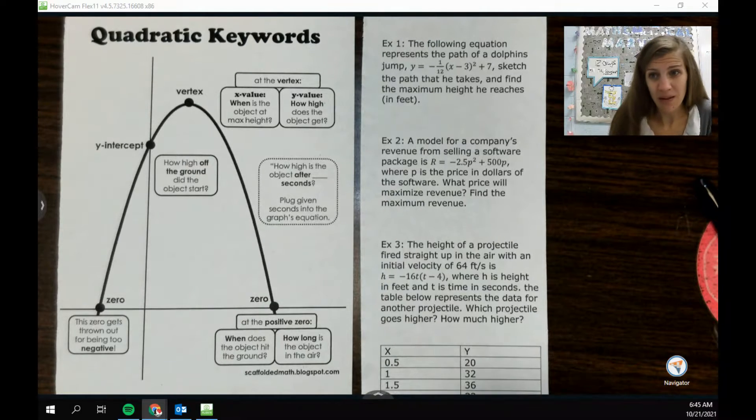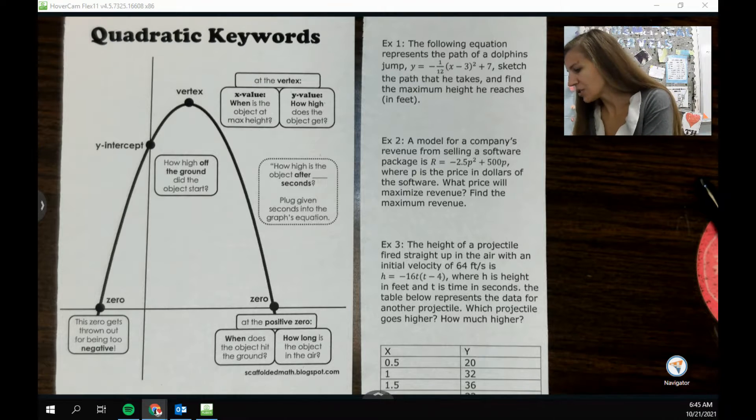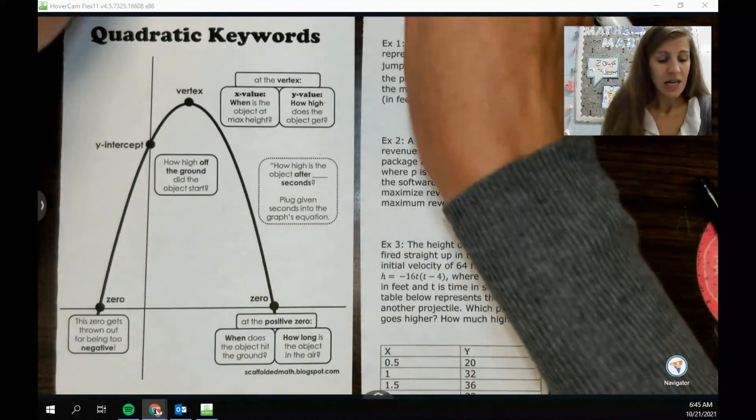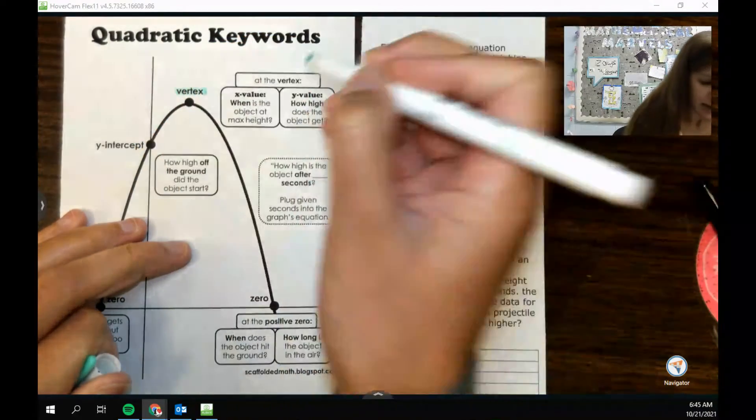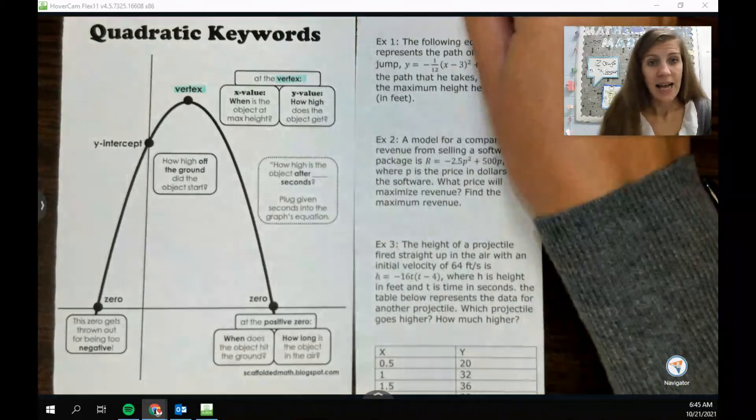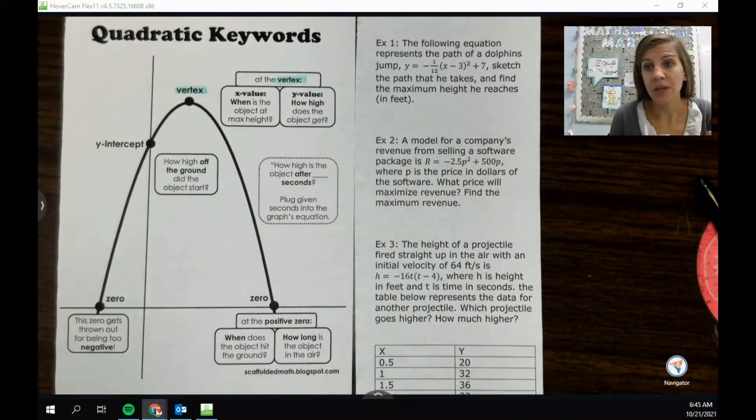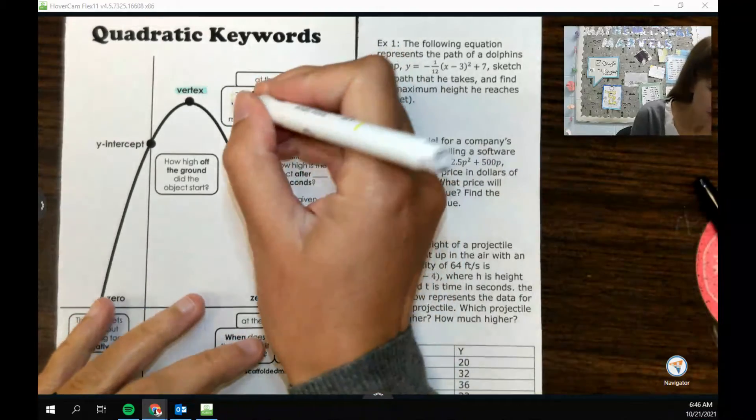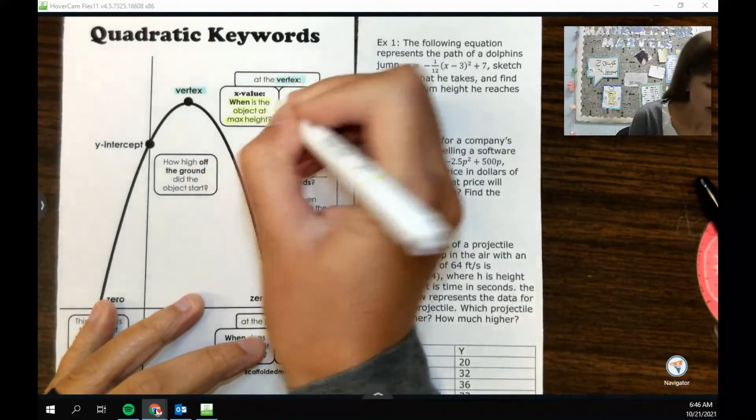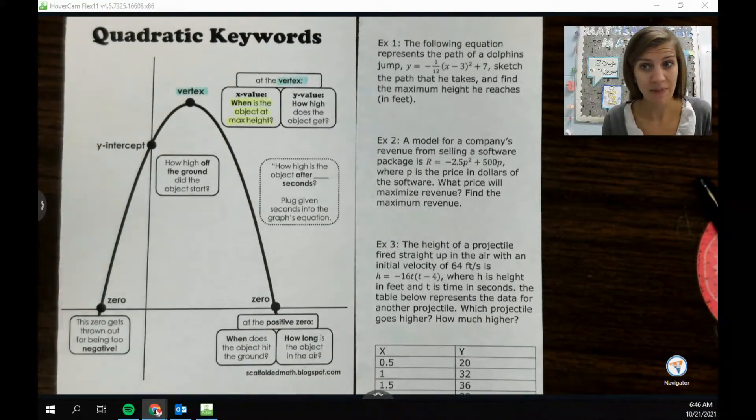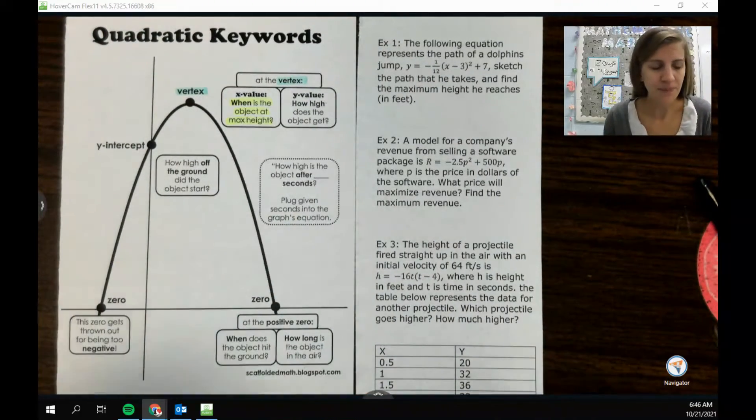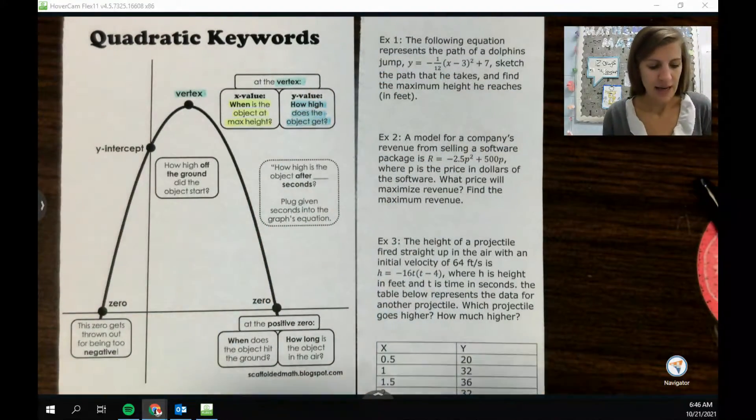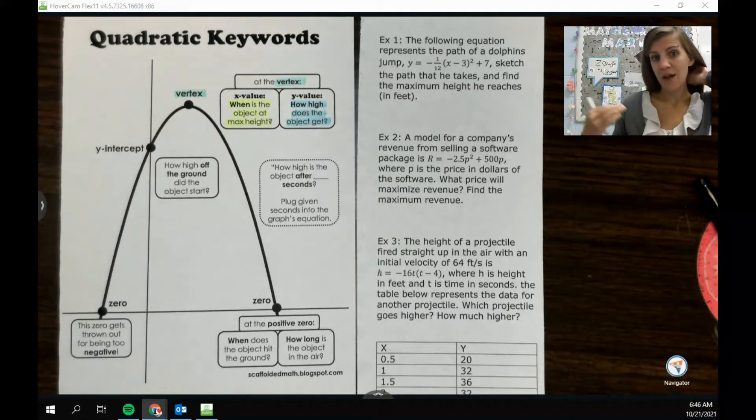If a parabola is describing a real life situation, probably something really important is happening at those key points. The main one that we talk about is the vertex. The vertex is super important, it is kind of like the most important point. At the vertex there's kind of two numbers happening there and so we have to pick the number that we want. If we want the x value, usually that's like when is the object at its maximum height, or if the parabola is going the other direction at its minimum value. The y value is kind of like how high did it actually get, like what was that maximum height. So kind of two different values there, when versus how high.